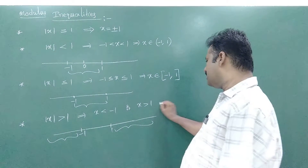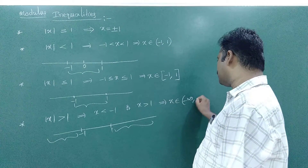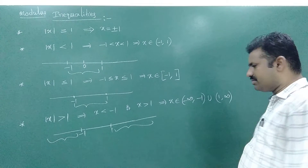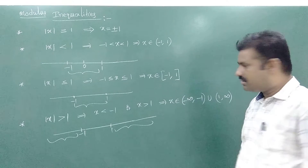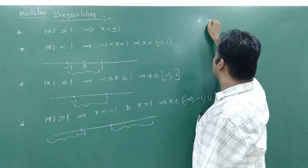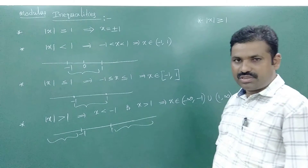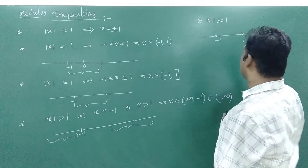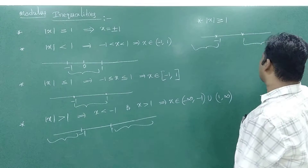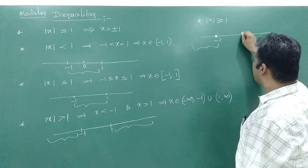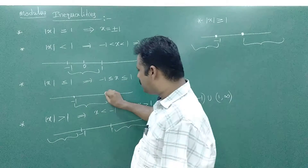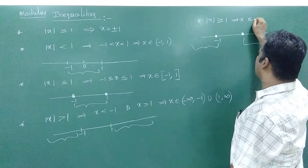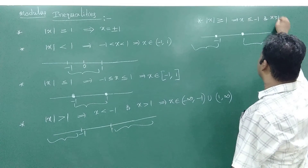So mod x greater than 1 implies x belongs to minus infinity to minus 1 (open) union open 1 to infinity. Now the last one: mod x greater than or equal to 1. All the numbers before minus 1, all the numbers after 1, and also the endpoints minus 1 and 1 are included. So that implies x less than or equal to minus 1 or x greater than or equal to 1.